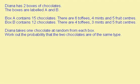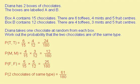Here's a question for you to do — press pause and have a go at it. When you're ready for the answers, press play. We're trying to work out the probability of Diana getting two chocolates of the same type. She could get two toffees: in the first box there are 6 out of 15 toffees, and in the second box there are 4 out of 12 toffees. She could get two mints, and two fruit centres. So the probability that she gets two chocolates of the same type is two toffees or two mints or two fruits, so we need to add these probabilities together.